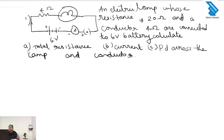The first question: an electric lamp whose resistance is 20 ohm and a conductor of 4 ohm are connected to a 6 volt battery. Calculate the total resistance, current, and the potential difference across the lamp and the conductor.